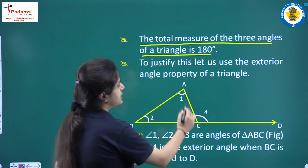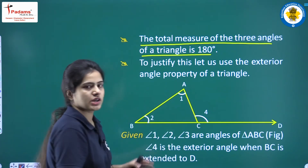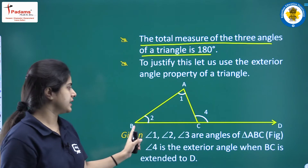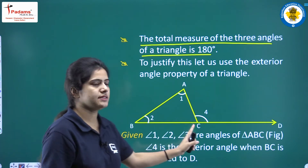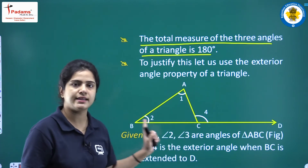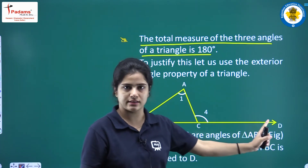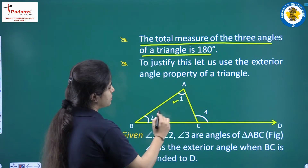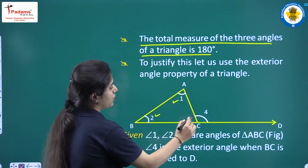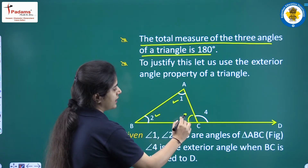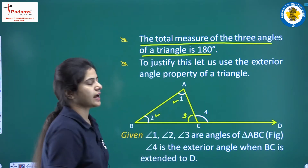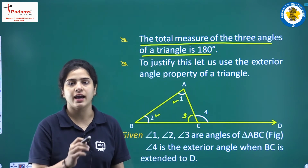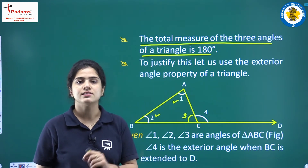We have triangle ABC. Now we have extended this triangle — extended BC to point D. Inside the triangle, angle 1, angle 2, and angle 3 are the three angles of the triangle.